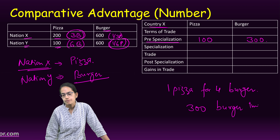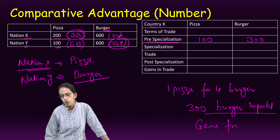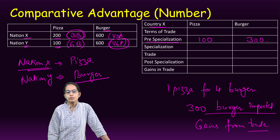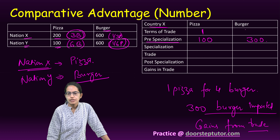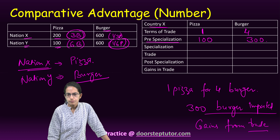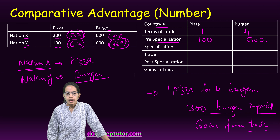We are talking only about country X now. Without specialization — that is pre-specialization — country X produces 100 pizzas and 300 burgers. Calculate the gains in trade if there are 300 burgers which are imported.